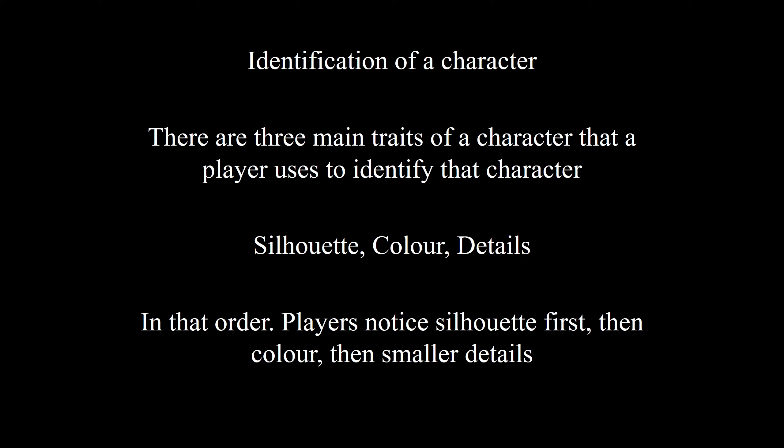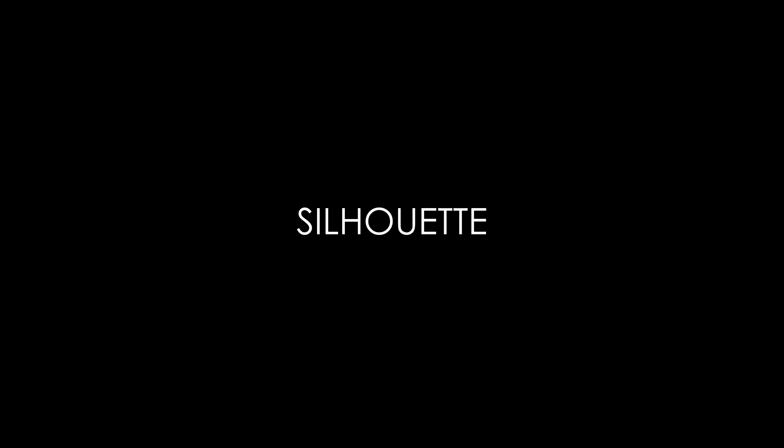There are three levels of how a player acquires a character — how quickly they can see and identify them. It almost always goes: silhouette, then color, then details. There are exceptions, but that's almost always the order.